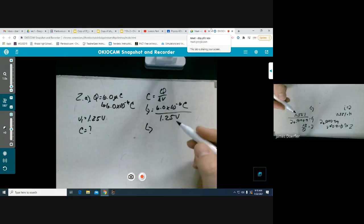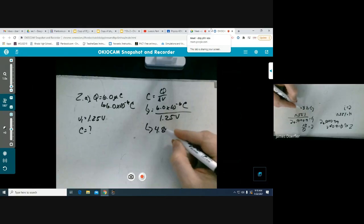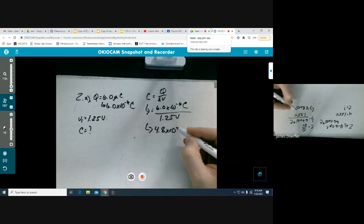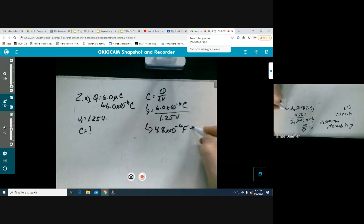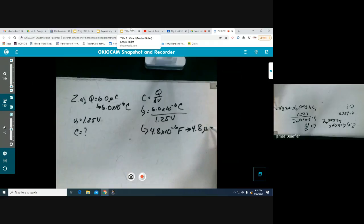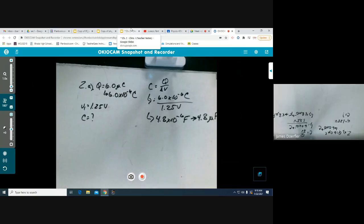So we're going to use the formula of C is equal to Q over delta V and we're going to go ahead and just plug in everything: 6.0 times 10 to the negative 6 coulombs divided by 1.25 volts. Double check my calculation but we should get an answer of 4.8 times 10 to the negative 6 farad or if you want to put 4.8 micro farads you could do that as well. Easy peasy right, let's check out part B though.